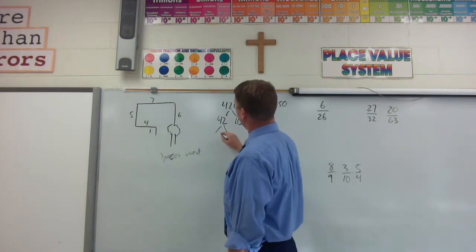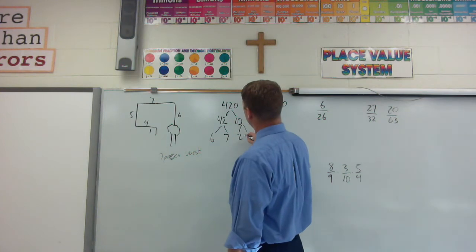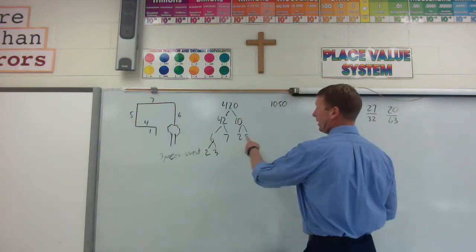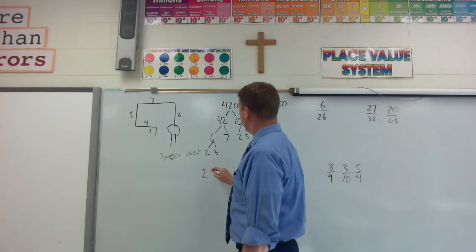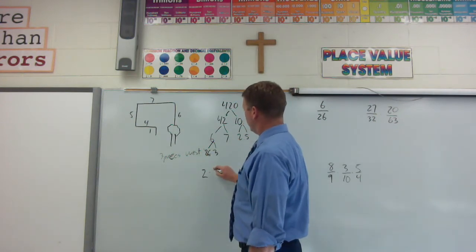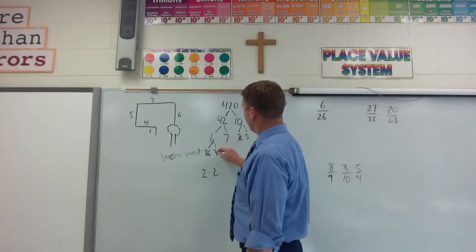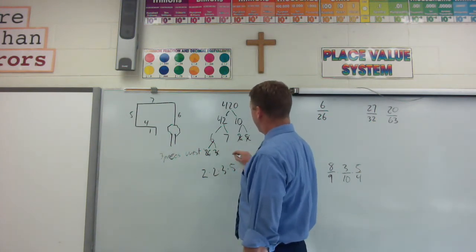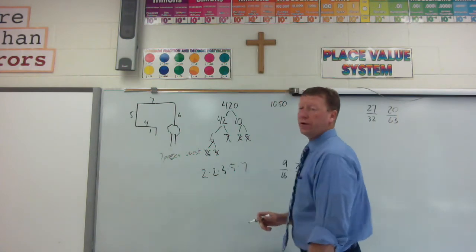So the first thing I did is break this to 42 and 10. I broke the 42 to 6 and 7. I broke the 10 to 2 and 5. I broke the 6 to 2 and 3. Now I write that in order. I have 2, I have 2, I have 3, I have 5, and I have 7. That's my numerator.